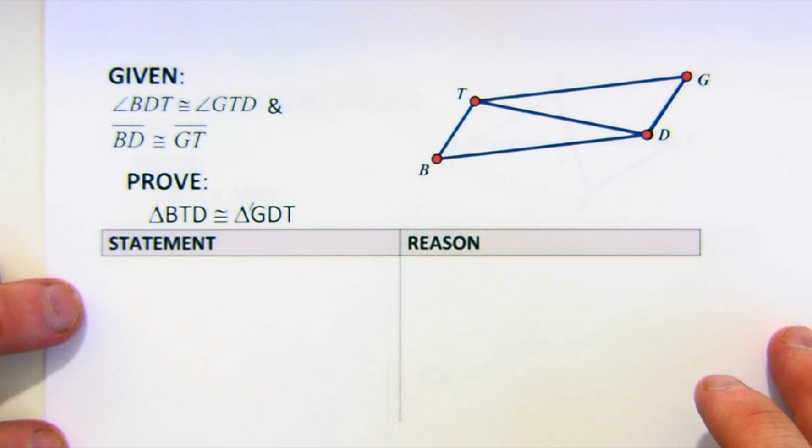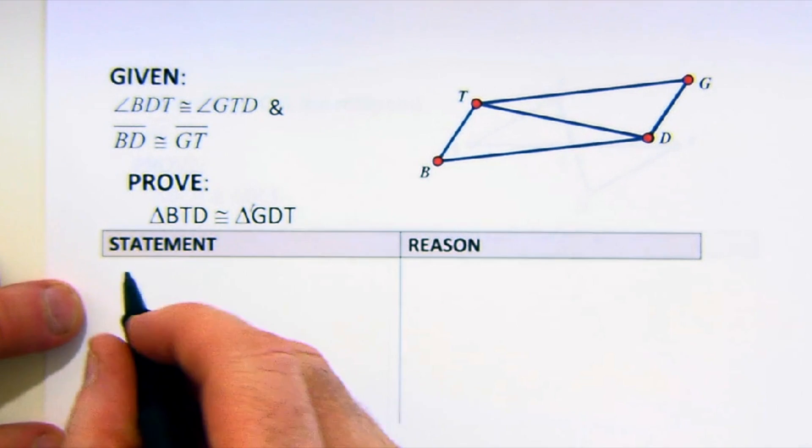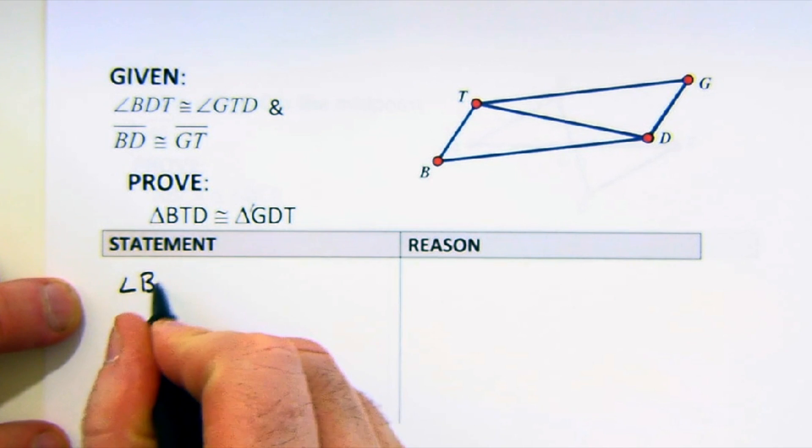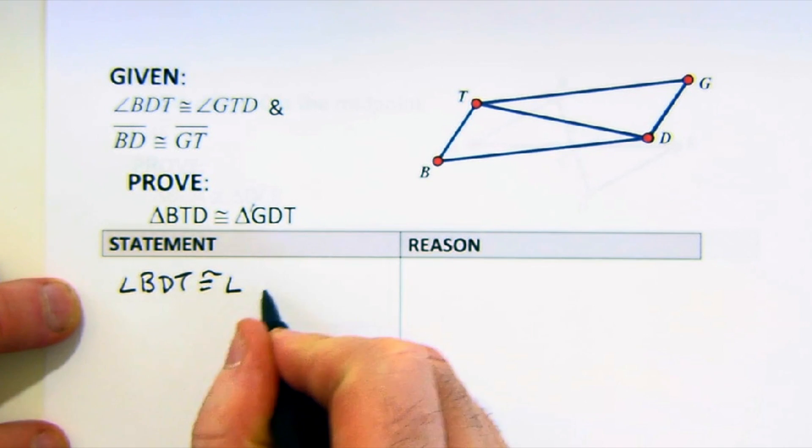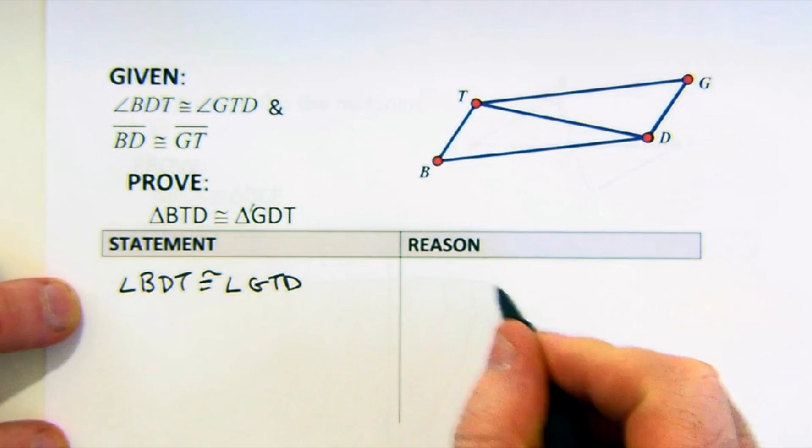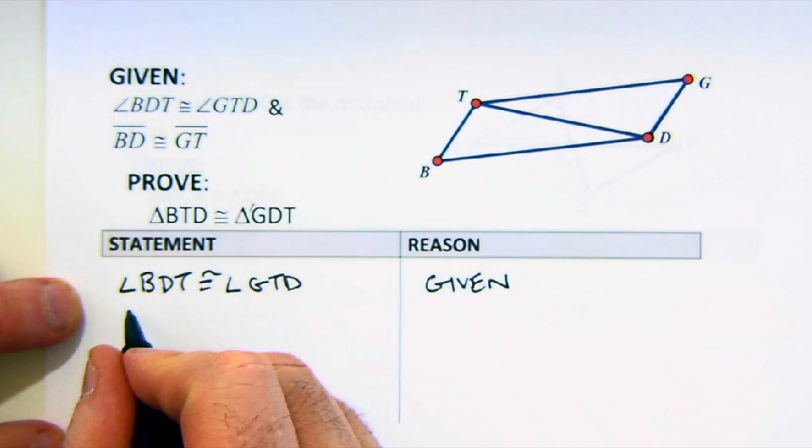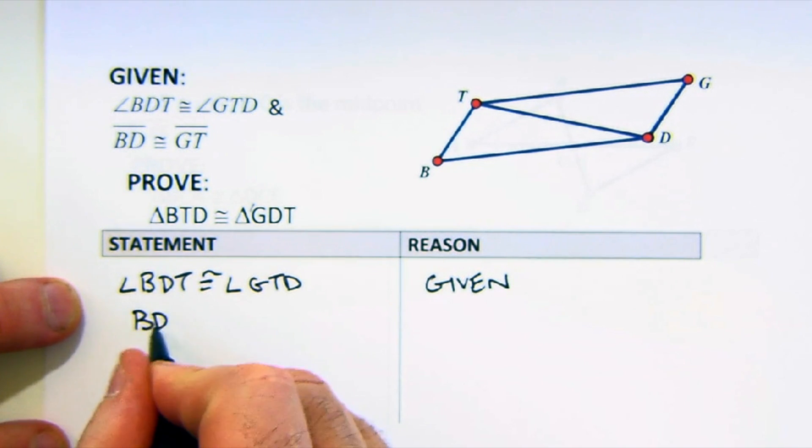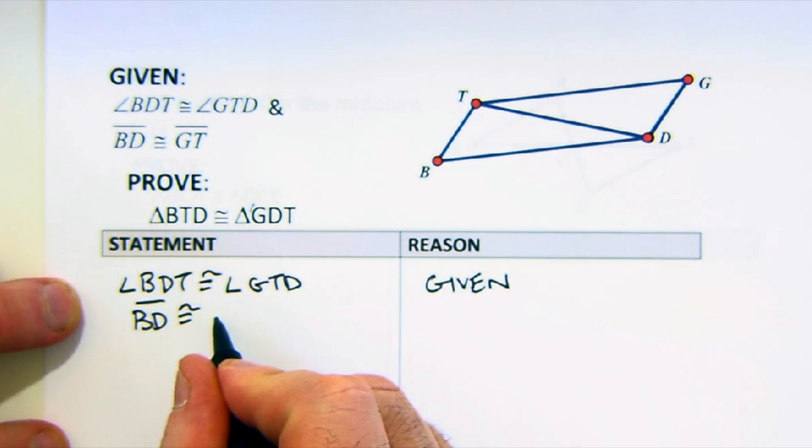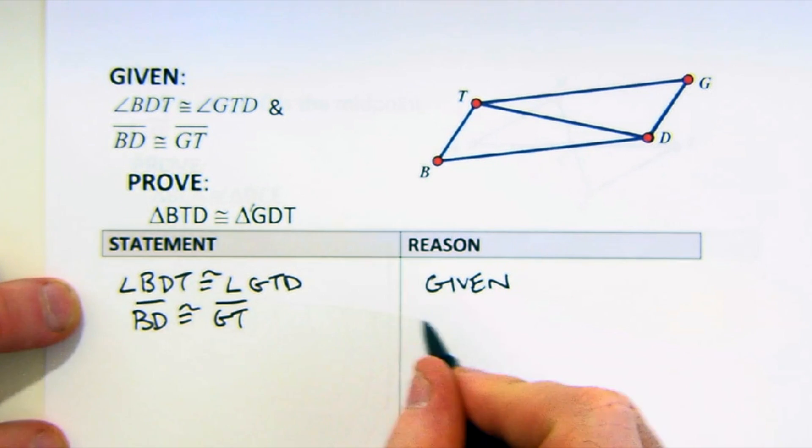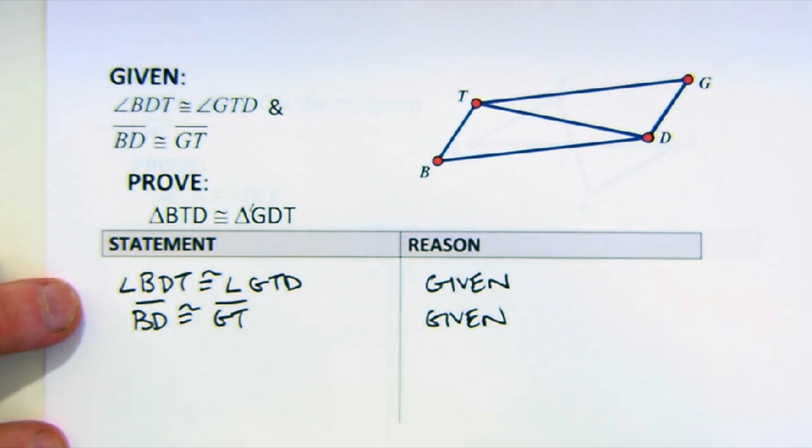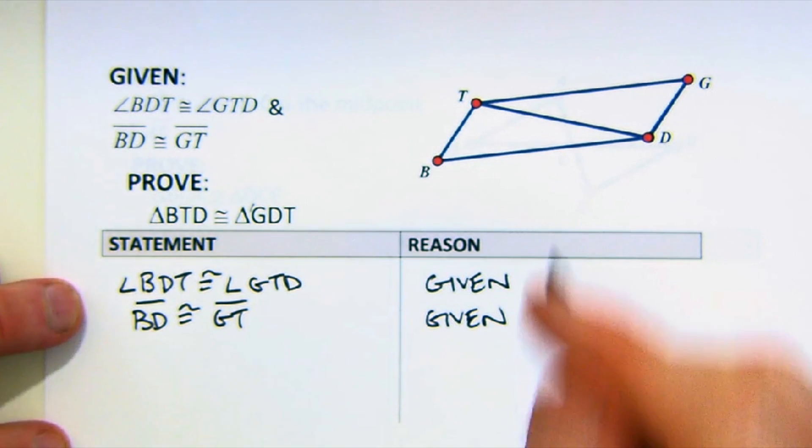Again, the typical pattern here is to begin by labeling or providing what they gave you. Many students, that seems to be redundant, and it's like, but you already know that. Well, it's important to put it in. It's also easy to put it in, so do it.